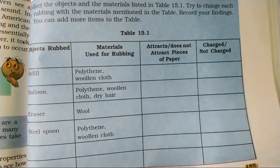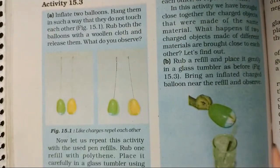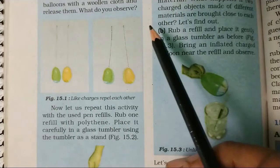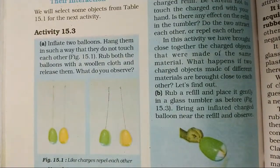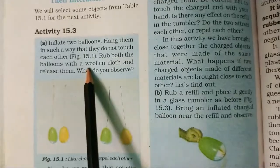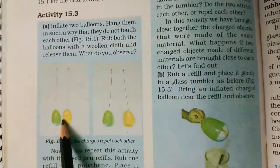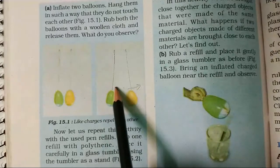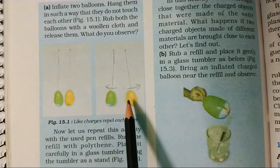This is proved in the book with an experiment. Inflate two balloons, fill them with air, and hang them. Then rub both balloons with woolen cloth. When you bring the two balloons close together, you will see that they move away from each other — they repel.